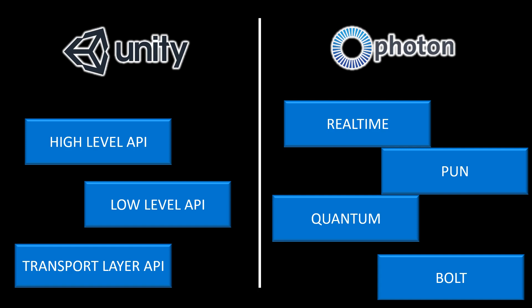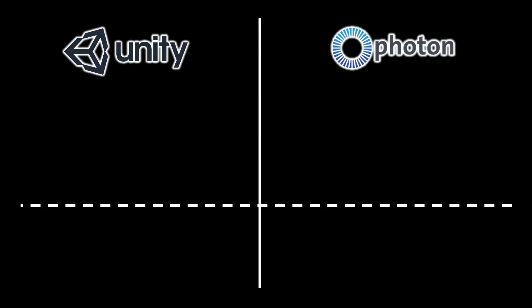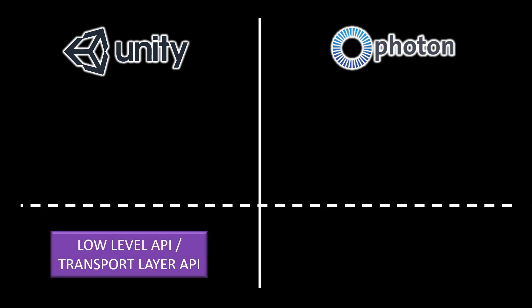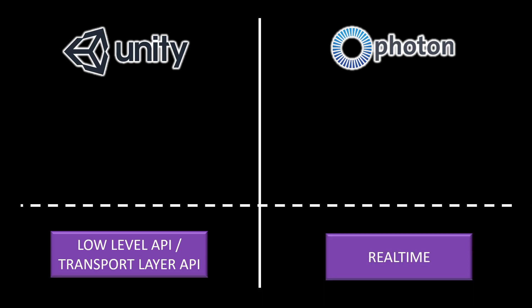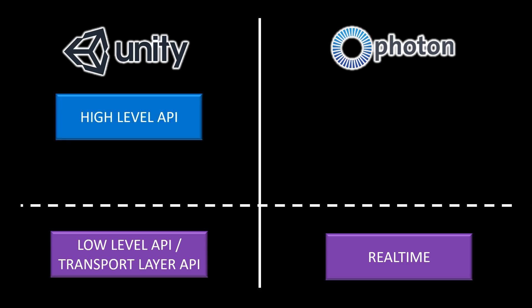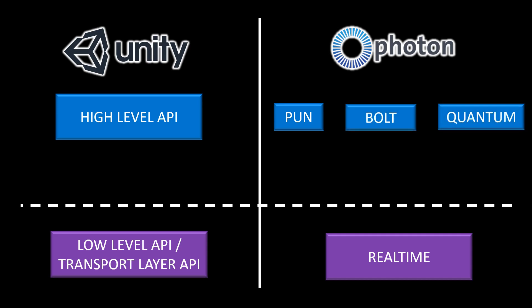I'm here to tell you what these are all about and which one you should choose. First, we draw a line because we have to differentiate between a low-level and a high-level API. On the low-level side we have the low-level API or the transport layer API — those two terms are used equally and mean the same thing. On the Photon side we have Real-time, which is basically the same as a low-level API. On the upper level we have the high-level API for Unity, PUN, Bolt, and Quantum on Photon.